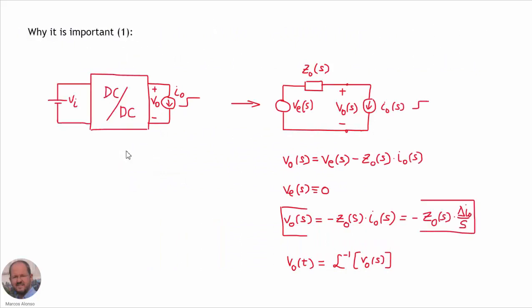The output impedance of a DC-DC converter is important because we can model the behavior of the converter at the output. For example, if we apply a step up or a step down transient at the output on the current of the converter, we can obtain from the output impedance how the output voltage is going to evolve in time. For this we can model our converter with the equivalent voltage source, the output impedance in series, and then the current source applying the step transient at the output.